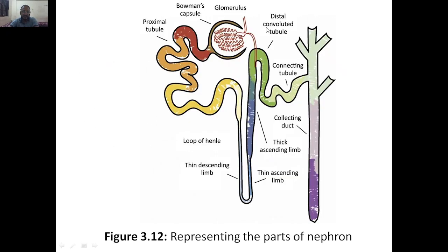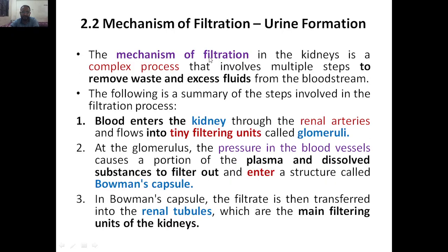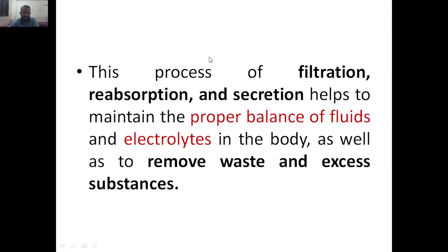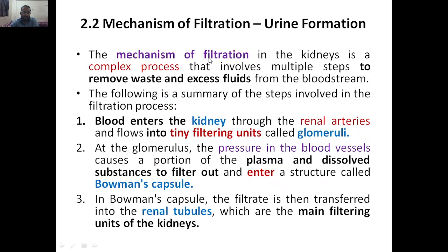The plasma and all dissolved substances will be filtered and then enter the Bowman's capsule. This is the Bowman's capsule — here filtration occurs, the blood is coming, filtration is occurring. Almost all nutrients present in the blood are filtered here, whereas the proximal tubule will reabsorb them. That is the second step.